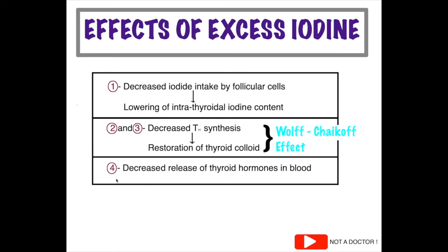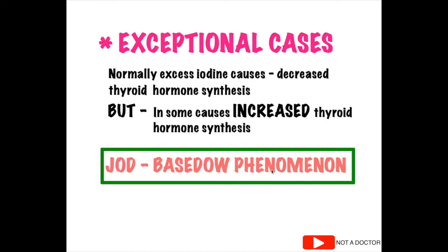There is one exceptional case: normally, excess iodine causes decreased thyroid hormone synthesis due to formation of iodopeptides. But in some rare individuals, excess iodine causes increased thyroid hormone synthesis rather than decreased synthesis, resulting in hyperthyroidism. This is known as the Jod-Basedow phenomenon, and it occurs in these rare individuals resulting in hyperthyroidism.